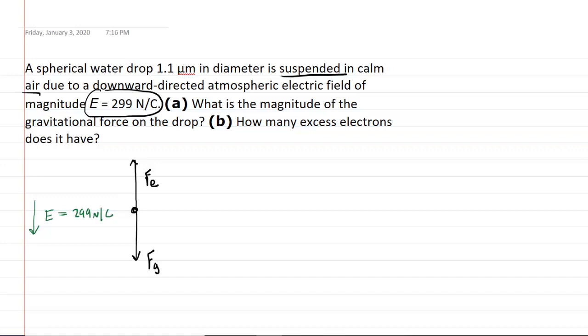Now, part A wants us to calculate the magnitude of the gravitational force, so Fg. We know from physics 101 or so, perhaps, that Fg is equal to mg.